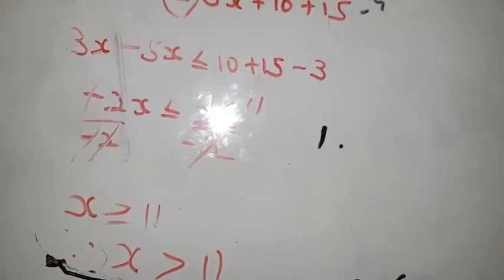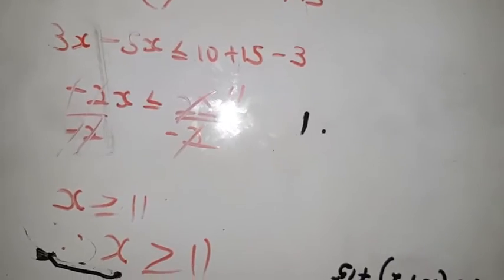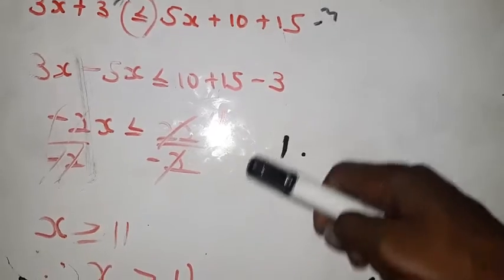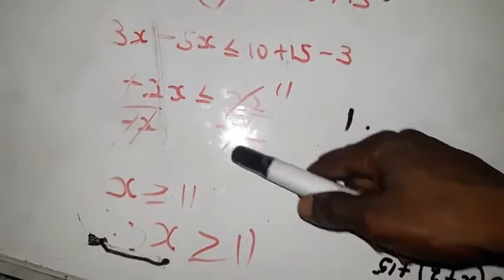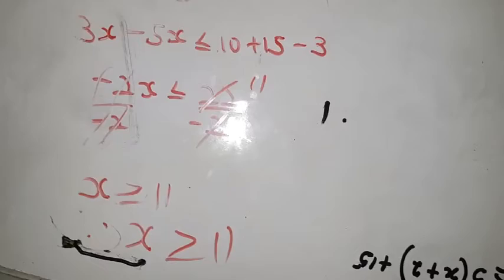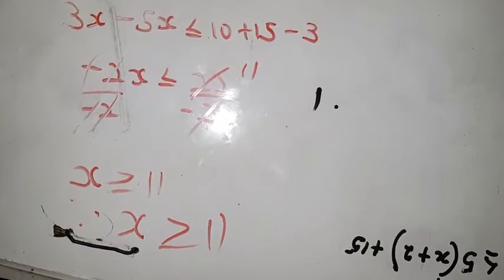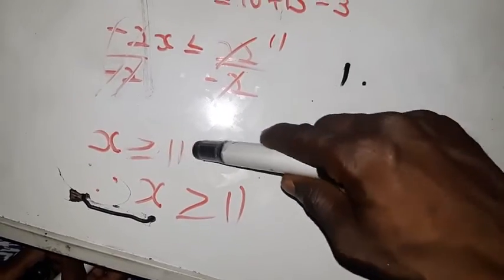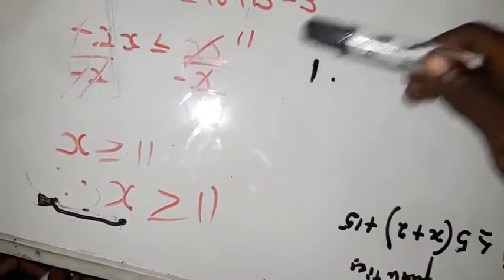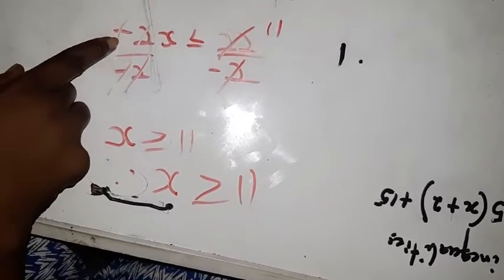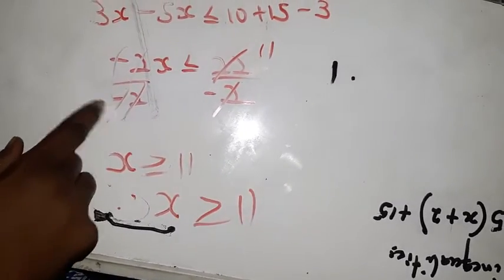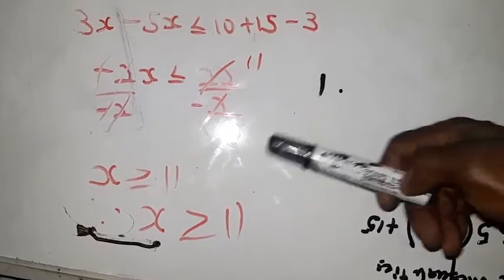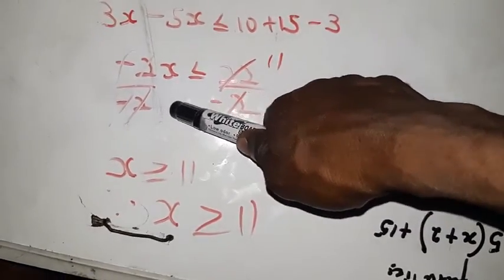After grouping you get -2s is less than or equal to 22. You're looking for s - the amount the waiter forgot at the beginning. Now how come this sign changes here? Because there is a negative sign over here. When you have a negative sign, this sign will change.